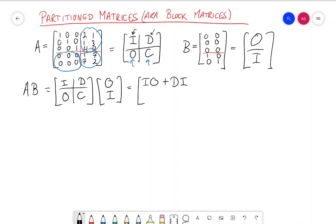And then for the second row, I have O times O, so O squared plus C times I.